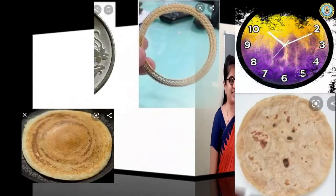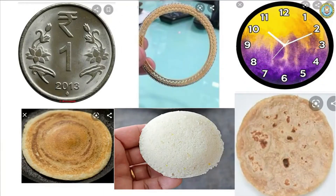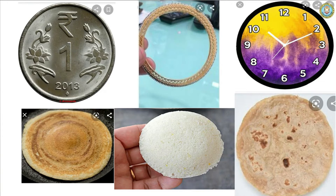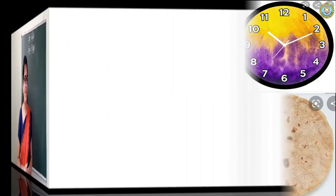Okay, look at the screen. Some examples of circle are: one rupee coin, bangle, and some wall clocks. Our food like dosa, chapati, and idli are circle in shape.